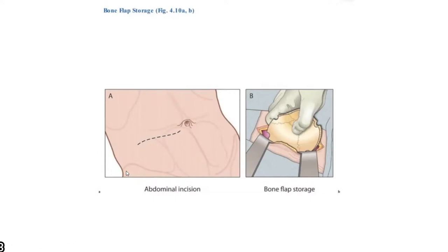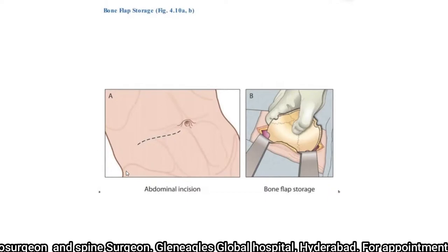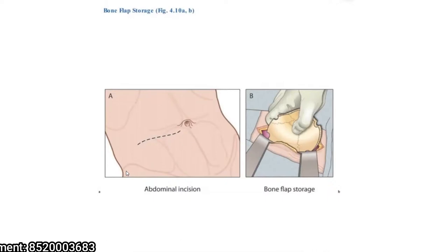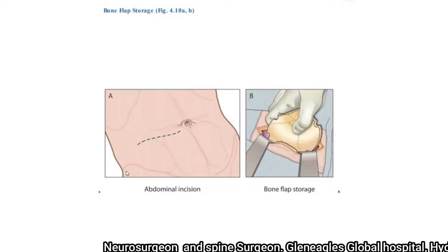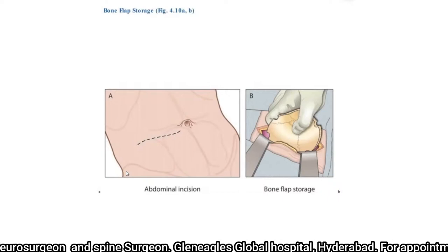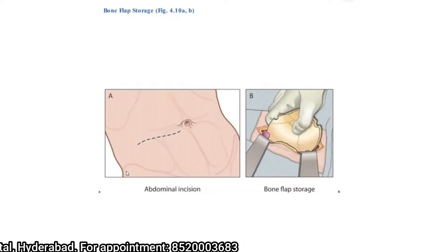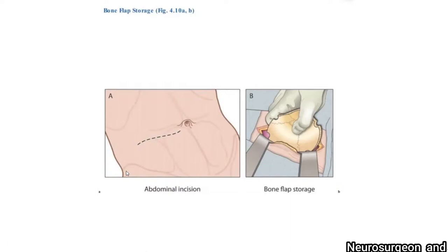With blunt dissection, I develop a proper plane above the rectus sheath and laterally above the oblique muscles. I ensure proper hemostasis and place the bone flap with the convex surface outside. If the patient is very thin and lean and I cannot develop a sufficient pocket, I sometimes divide the bone flap into two pieces and stack them one above the other. Most importantly, once I place the bone flap, there should be no tension in the skin when closing — tension can prevent healing and cause necrosis. If doubtful about hemostasis, a closed suction drain may be placed. This completes our technique of decompressive craniectomy.